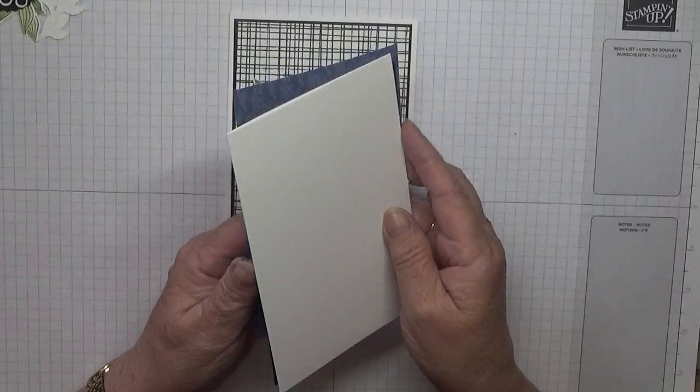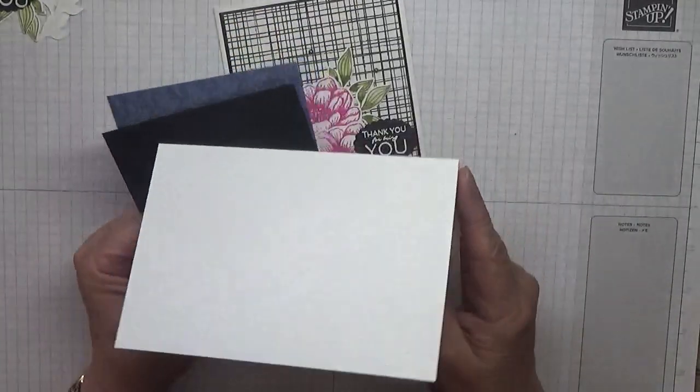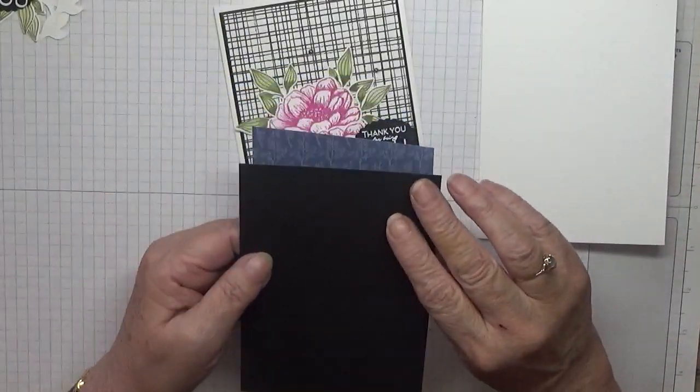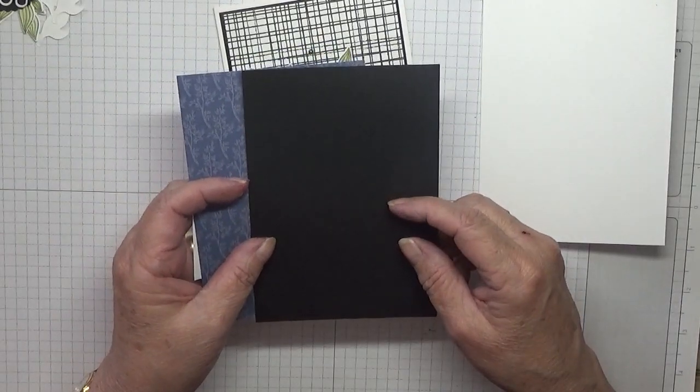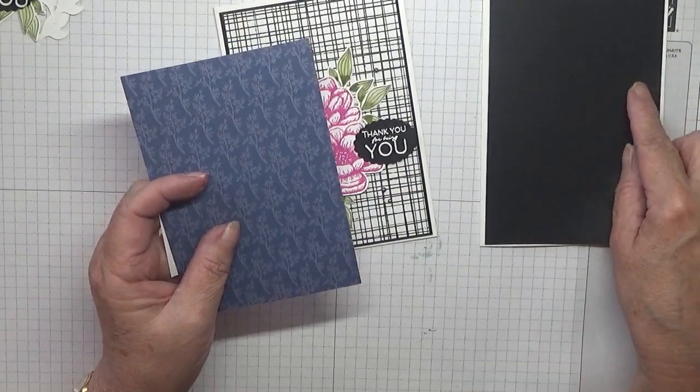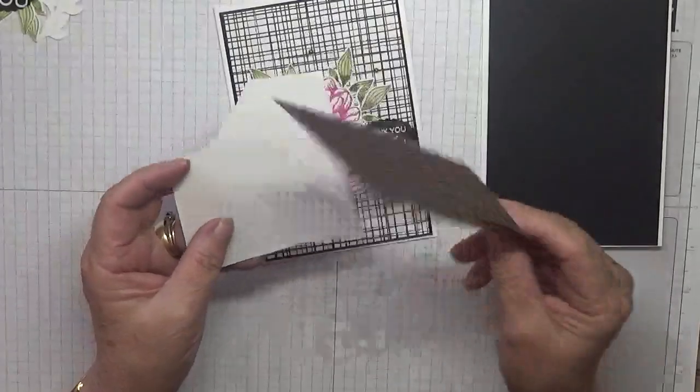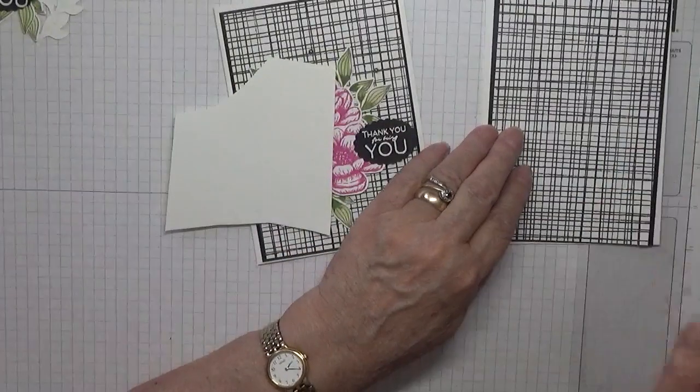Card-wise, I've got a white card base of 8 and a quarter by 5 and 7/8 scored at 4 and 1/8, folded in half. I have a black Basic Black cardstock at 5 and 5/8 by 3 and 7/8.